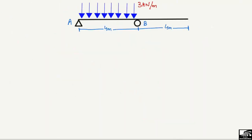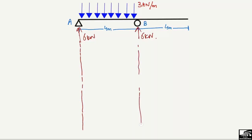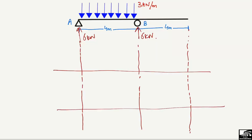With both support reactions equal to 6 kilonewtons, we draw reference lines for the important points on the beam to construct the shear force and bending moment diagrams. The shear force is represented in kilonewtons and the bending moment in kilonewton-meters. Starting from the zero reference line for shear force, RA = 6 kilonewtons acts upward, so the shear force jumps up to 6 kilonewtons.